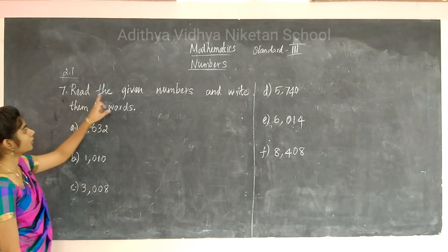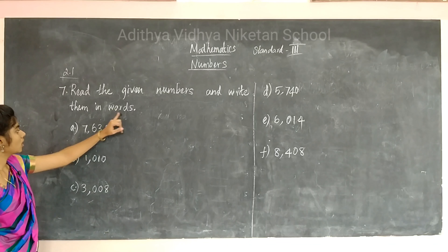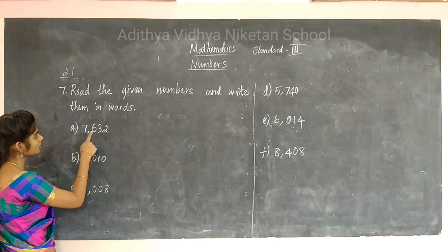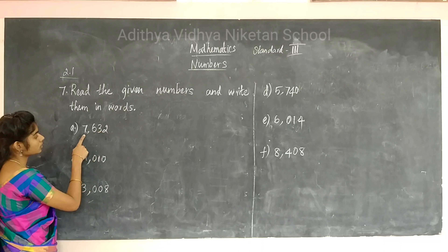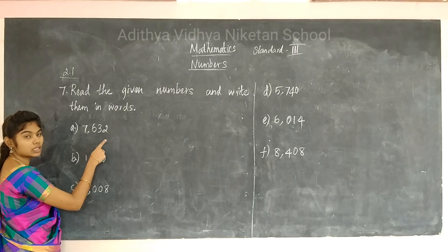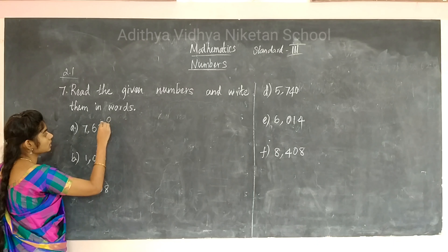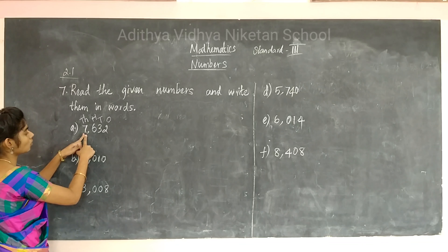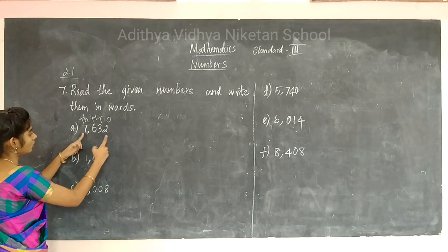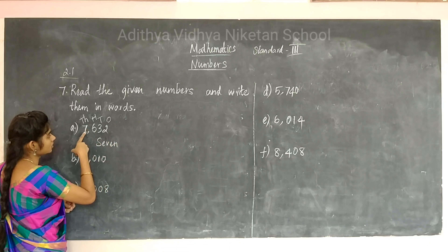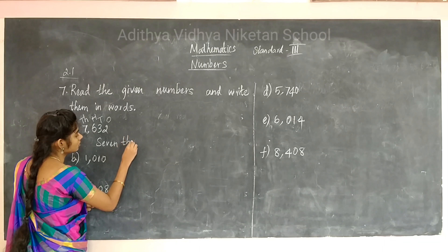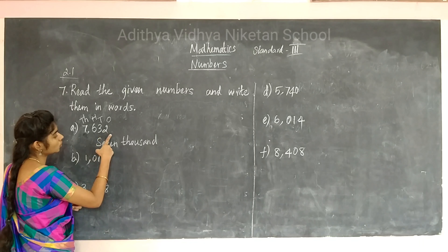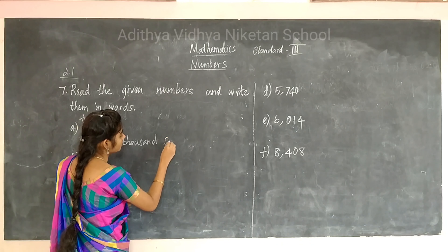Seventh problem: read the numbers and write them in words. For 7,632 — write the place values: ones, tens, hundreds, thousands. Then read: 7,000 in the thousands place, and 632 in the rest. So seven thousand six hundred and thirty-two.